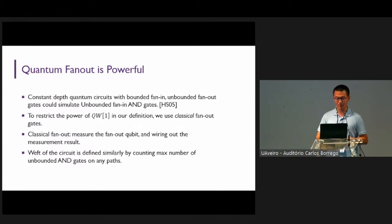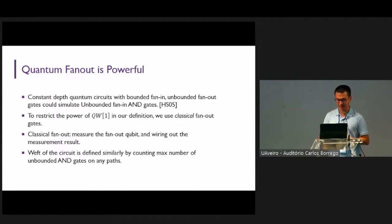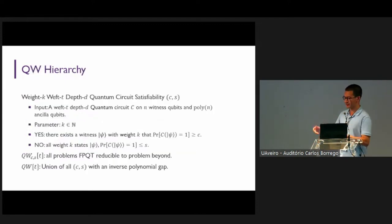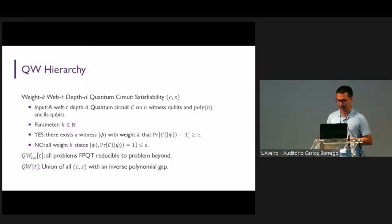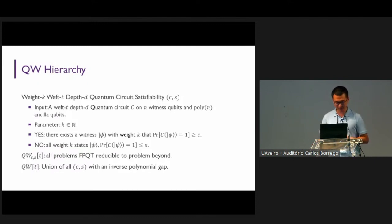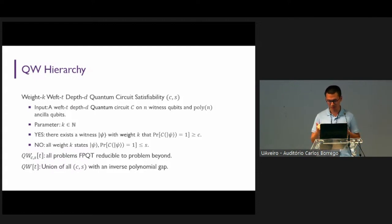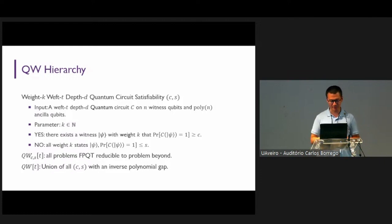So here we use classical fan-out instead. By classical fan-out, we mean that we measure the fan-out qubit and wire out the measurement result. The weft is then defined similarly by counting the maximum number of unbounded AND gates on any path. After all these fixes, we can formally define the QW hierarchy. There is one more subtlety: we do not have any error reduction techniques for these QW classes, so we have to define a class for every completeness and soundness parameter. When defining the final class QW[t], we define it as the union of all such completeness and soundness parameters with an inverse polynomial gap.